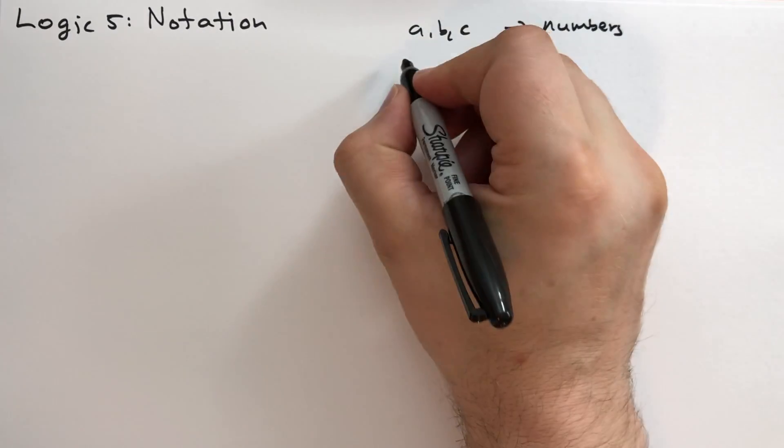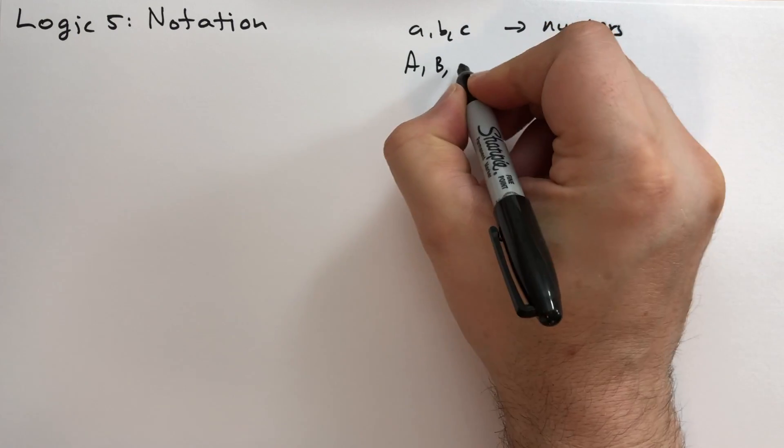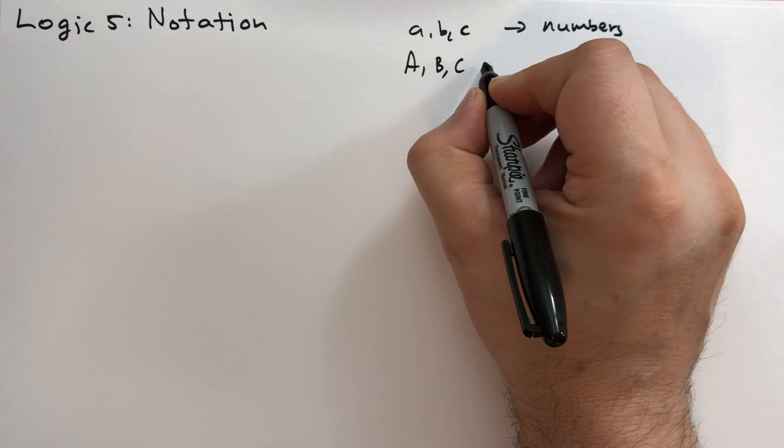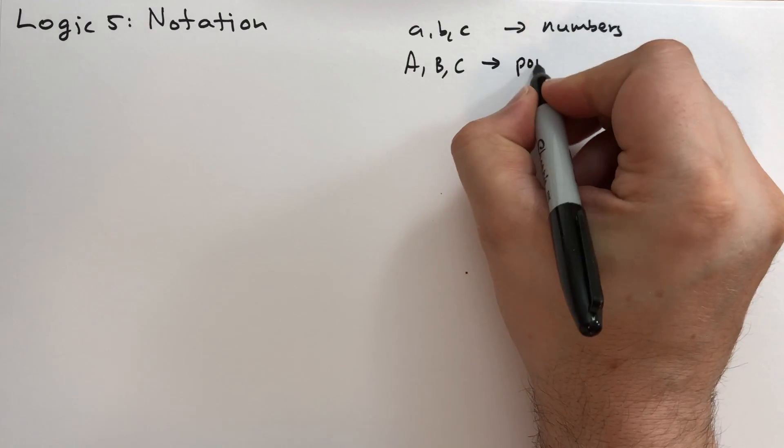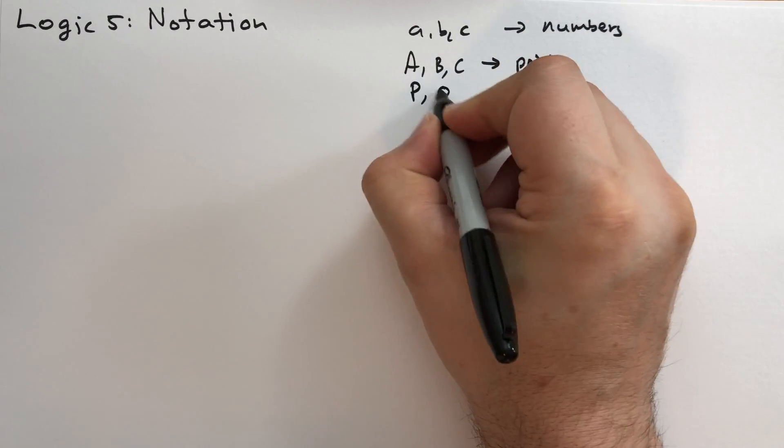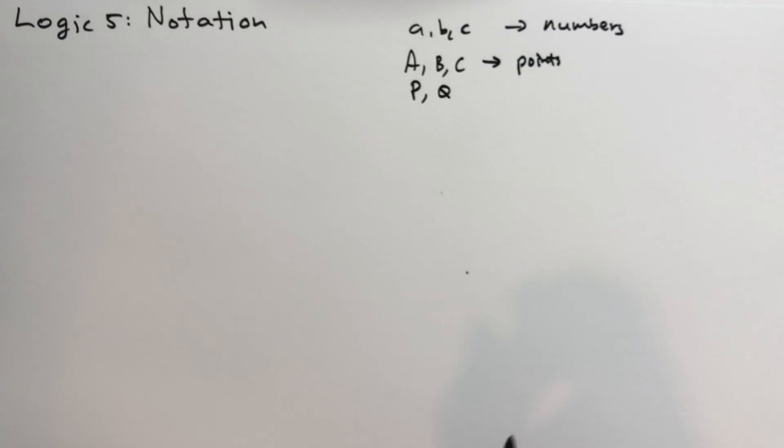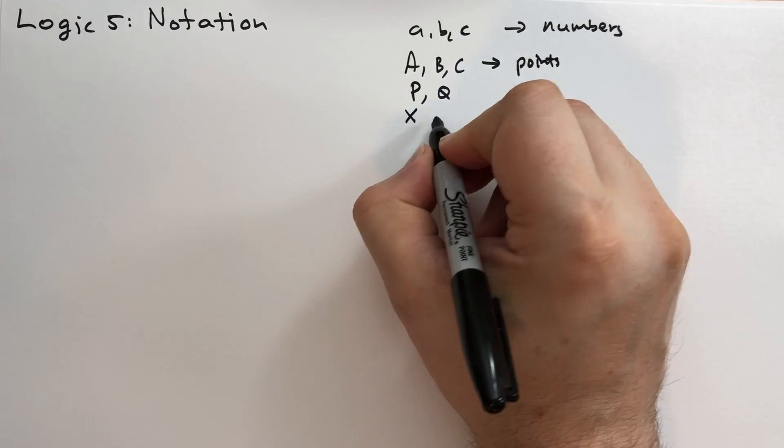And then uppercase letters like capital A, capital B, capital C are used to describe points. Particularly, he likes to use P and Q a lot for points, and sometimes he likes to use X and Y.